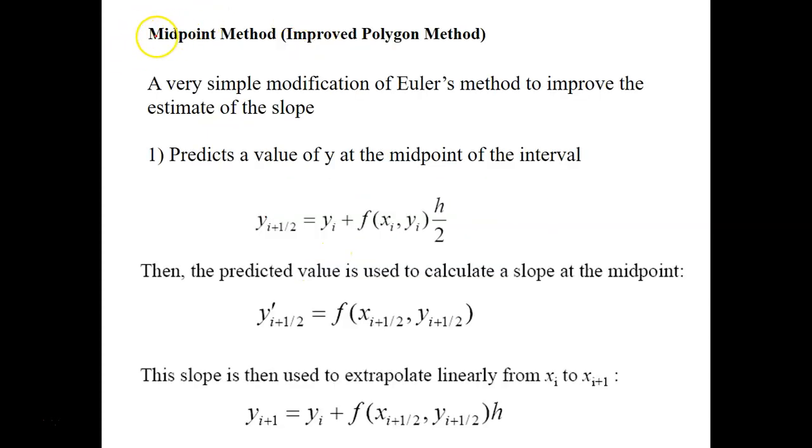So for the first one, we call it the midpoint method, and this is a very simple modification of Euler's method in order to improve the estimate of the slope, which is dy/dx. The first procedure is we need to predict a value of y at the midpoint of the interval.